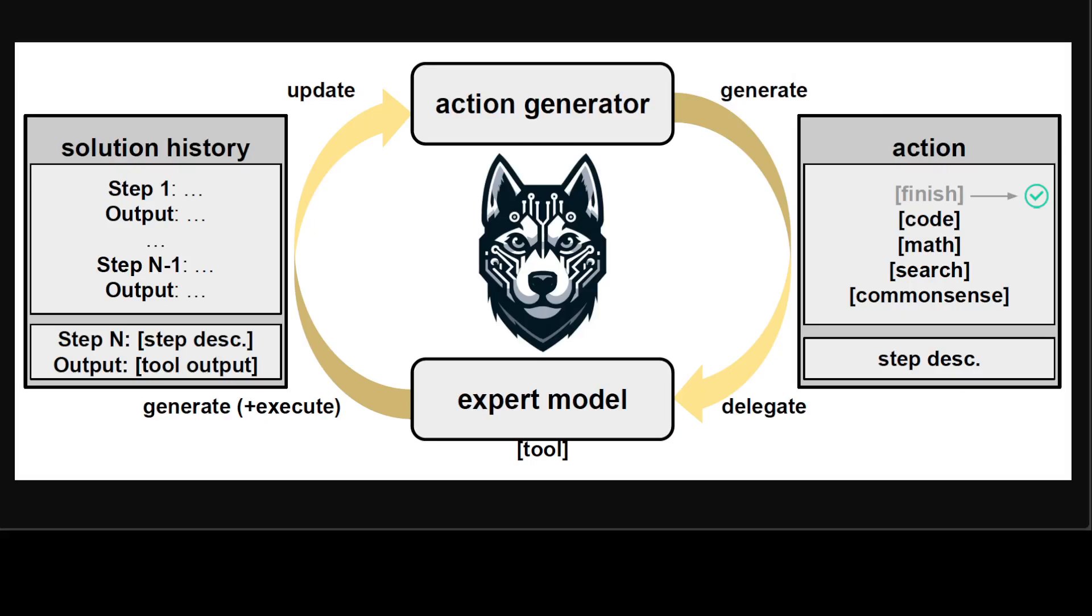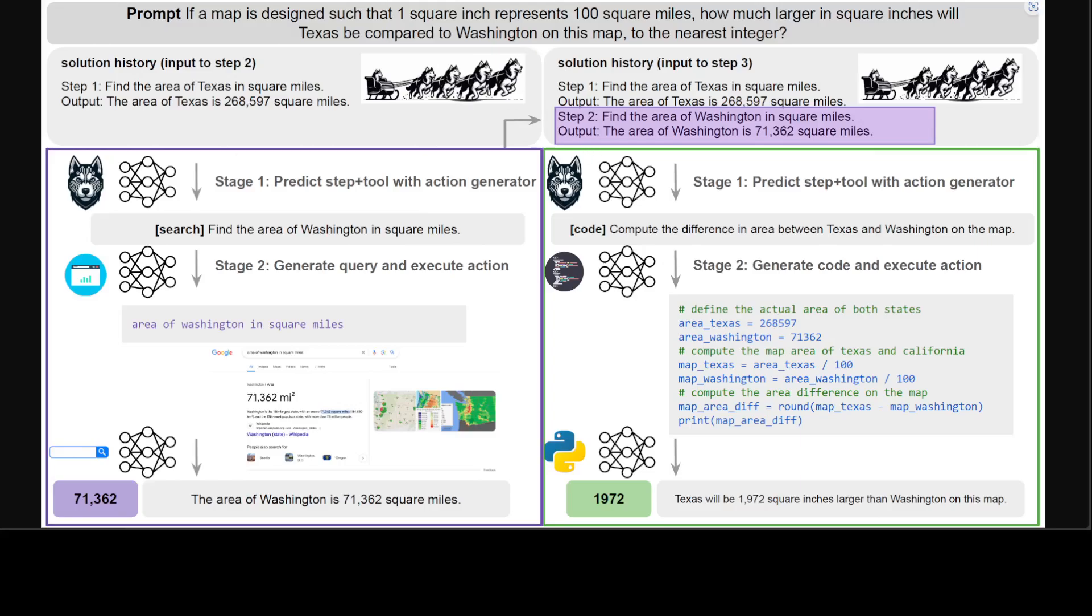Husky uses a code generator, a query generator, and a math reasoner as expert models. If you look at this diagram, this gives you an overview of Husky.